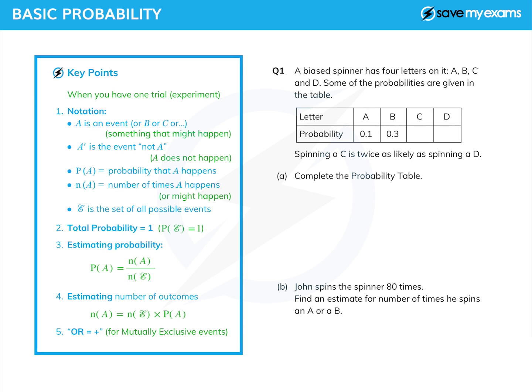Right, let's have a look at this first question. We have the classic biased spinner, and it has four letters, A, B, C, and D.